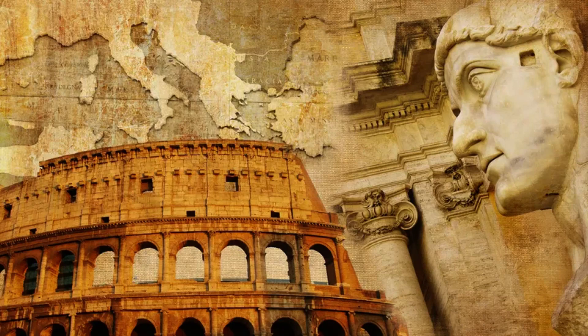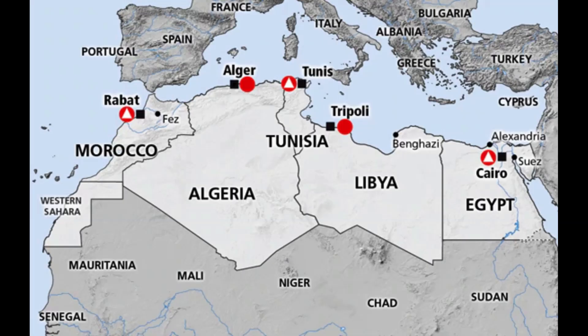It is worth noting that the use of the name Africa to refer to the continent as we know it today dates back to the Roman era. The Romans used the term Africa to refer to the land south of the Mediterranean Sea, including the territories that now correspond to Tunisia, Algeria, and part of Morocco.